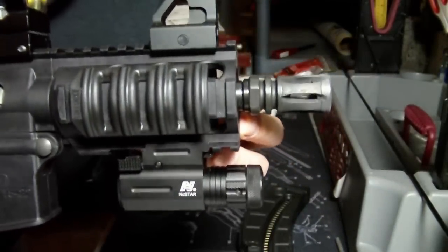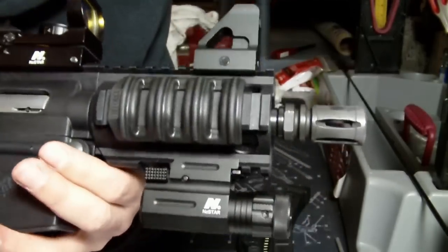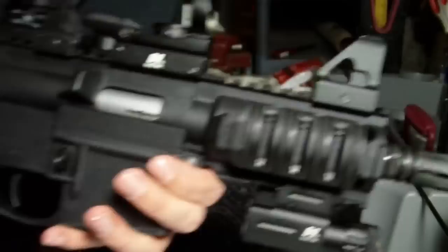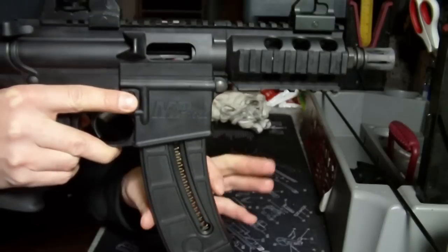It does have a muzzle flash hider, birdcage style, that was originally with it. You can twist them off and put anything else on there that you want. I just really haven't had a chance, nor the need, as that birdcage works pretty well.